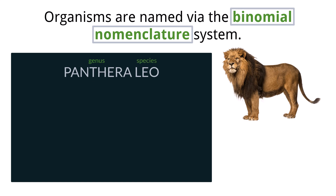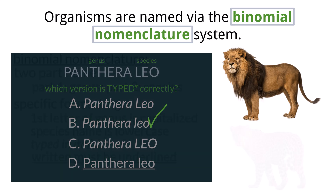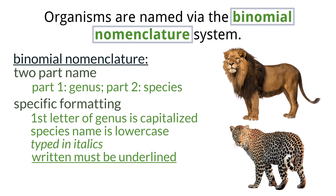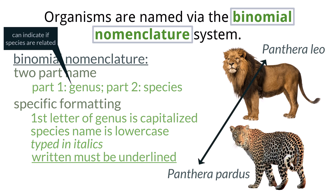Panthera leo is the scientific name for the African lion. Which version do you think is written correctly? If you picked B, you got it right. It's important to note that the genus name can indicate that two different species are closely related. So for example, we have Panthera leo. And Panthera pardus, which is a leopard, shares a close lineage and many physical features with Panthera leo, which is why they both share the same genus name, Panthera.